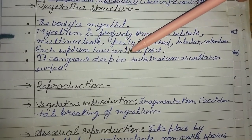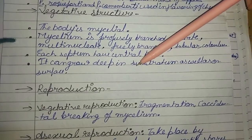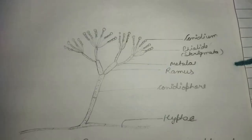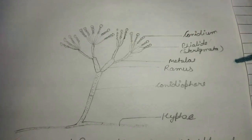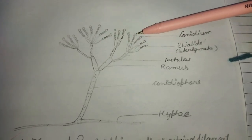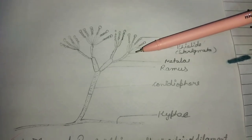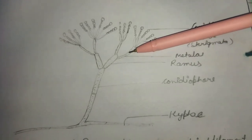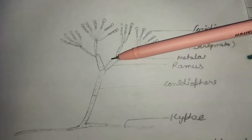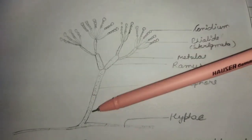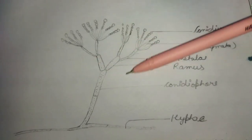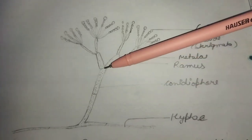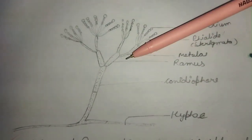It can grow deep in the substratum as well as on the surface. So this is how your Penicillium looks like. You can see here are the Conidia about which we will study later. These are your Phialids which are also called Sterigmata. This is your Metulae as you can see in the labeling. This is your Ramus. This particular structure is your Conidiophore in which all of these structures are present. And this is your Hypha. You can see the septum which is present.